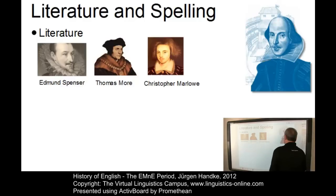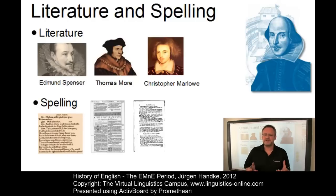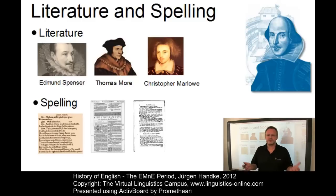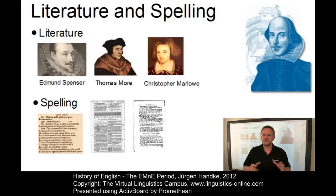And early modern English spelling? Most spelling patterns were formulated in their essential details during the late Middle English and the early modern English period. By the end of the 17th century, the principle of a fixed spelling for every word was firmly established for printed works. And over the course of the following century, personal spelling followed suit.